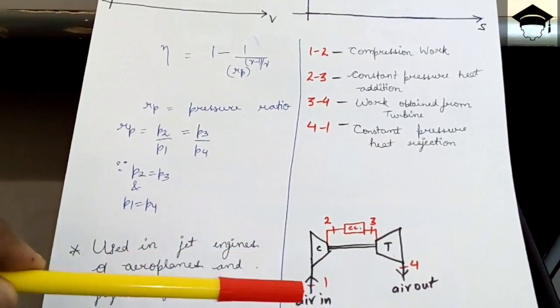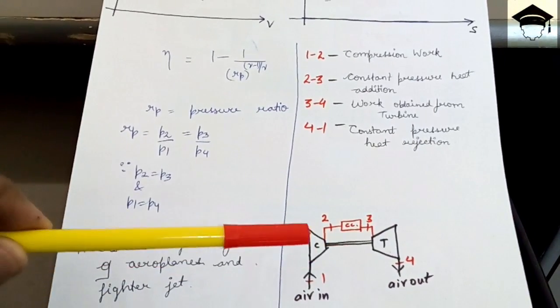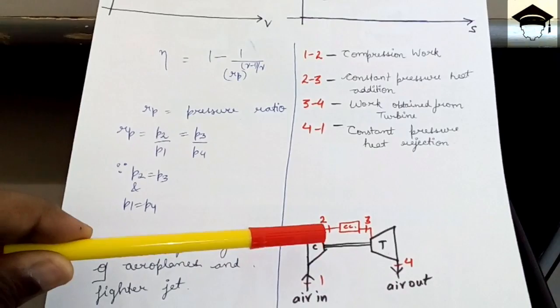So here there are three main components that is the compressor, combustion chamber and turbine.